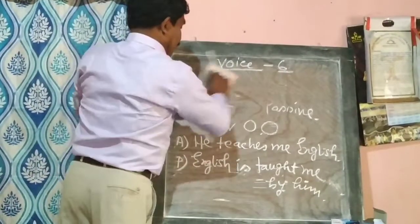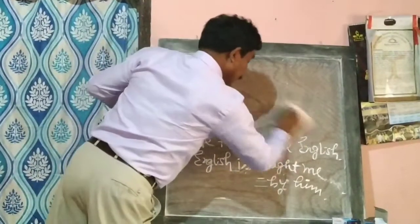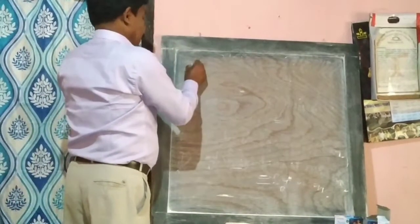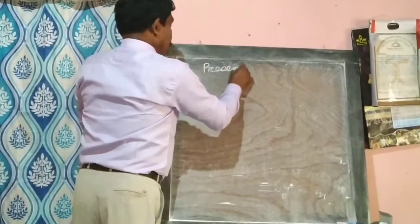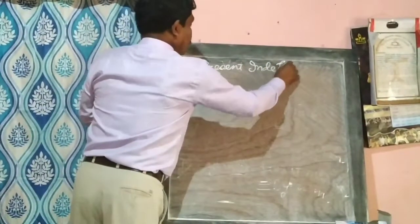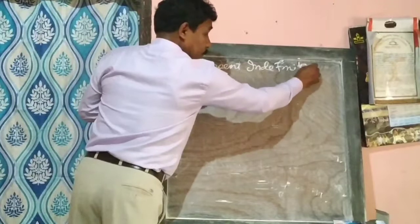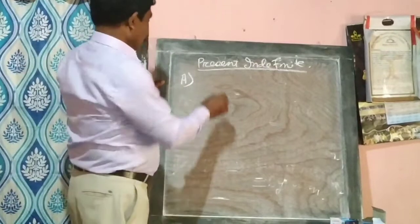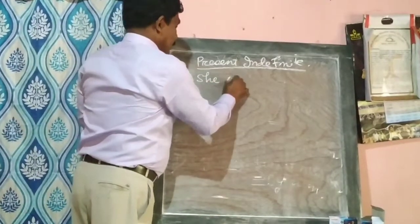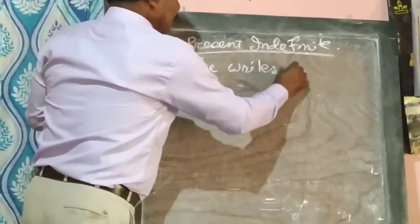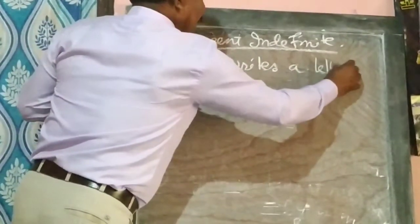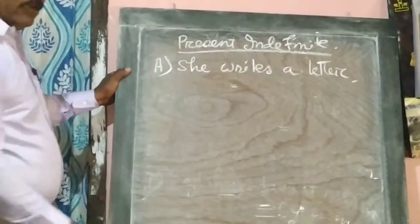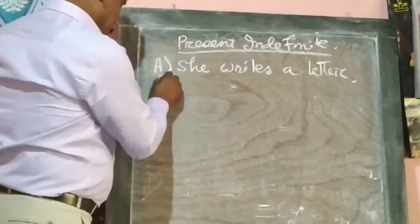Now let me show you the present indefinite tense program. Active voice: 'C writes a letter.' This is present indefinite tense.